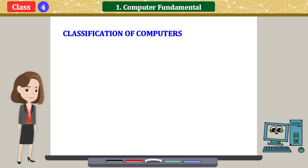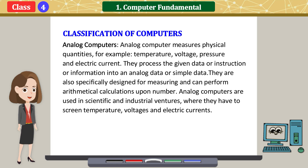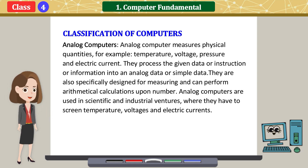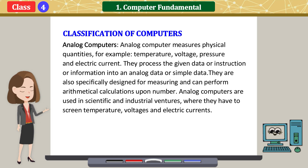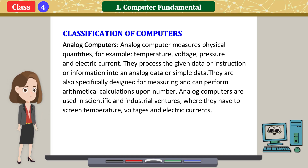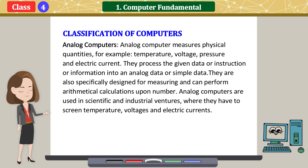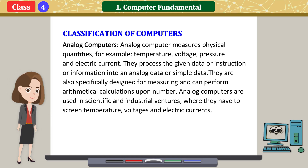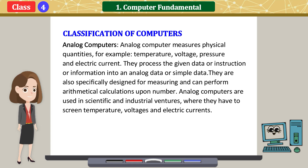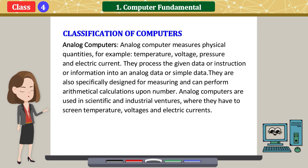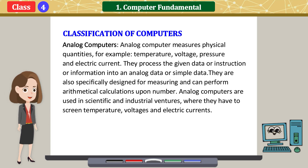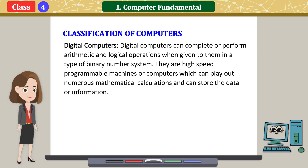Classification of computers — Analog computers: analog computers measure physical quantities, for example temperature, voltage, pressure, and electric current. They process the given data or information into analog or simple data. They are also specifically designed for measuring and can perform mathematical calculations upon numbers. Analog computers are used in scientific and industrial ventures where they have to screen temperature, voltages, and electric currents.